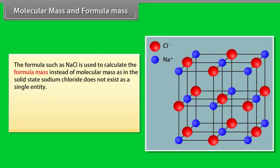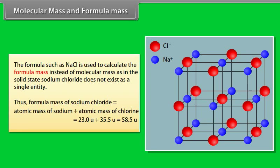For ionic compounds such as NaCl, we use formula mass instead of molecular mass, since sodium chloride does not exist as a single entity in the solid state. The formula mass of sodium chloride = atomic mass of sodium + atomic mass of chlorine = 23.0U + 35.5U = 58.5U.